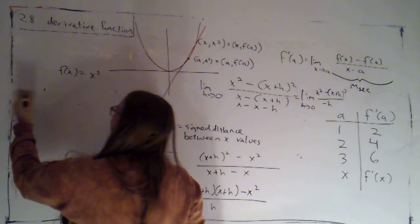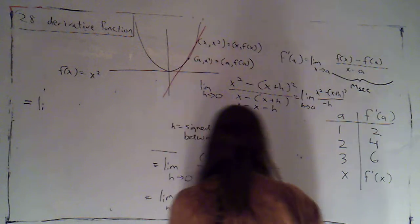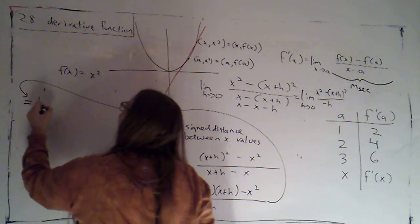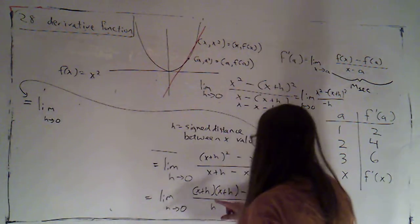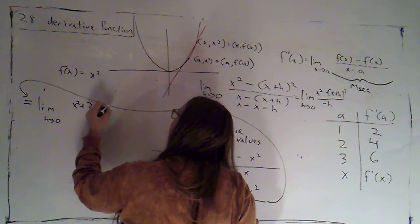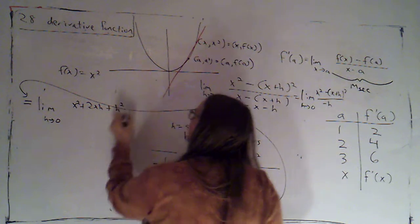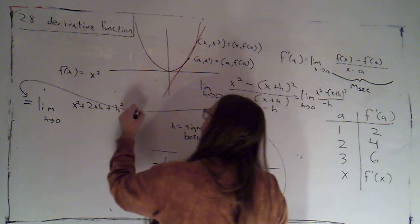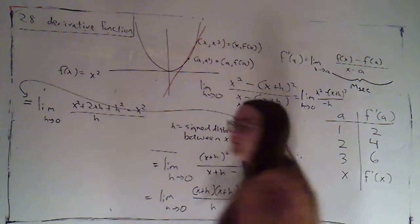So we're getting that this is equal to, this is continuing from over here, the limit as h goes to zero. Of, if I FOIL that out, I'm going to get x squared plus 2xh plus h squared minus x squared all over h.